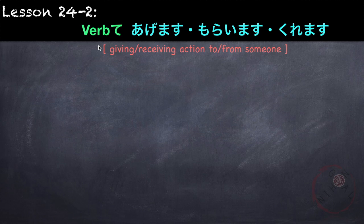Next is giving or receiving an action to or from someone. We can combine a verb with agemasu, moraimasu, or kuremasu. This means doing a favor for someone or receiving a favor from someone. Adding these after a verb expresses gratitude and a sense of goodwill to the giver of the favor.